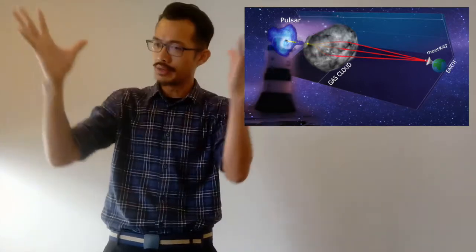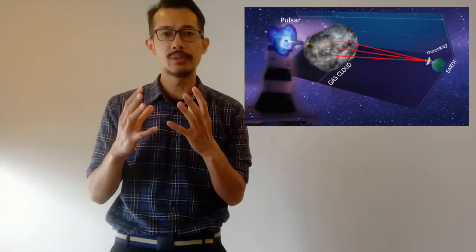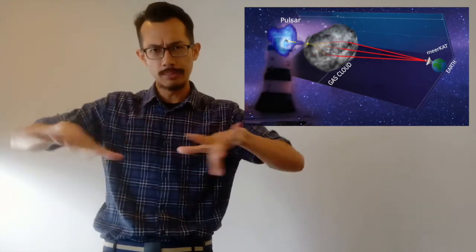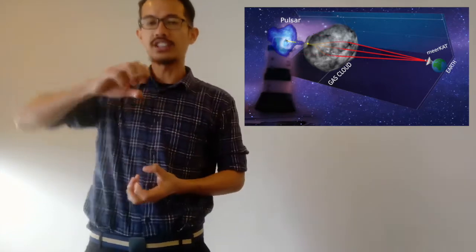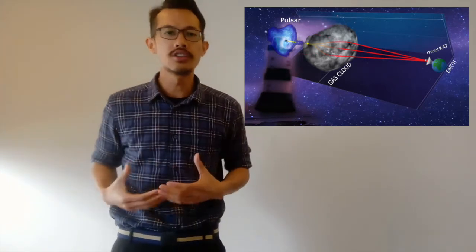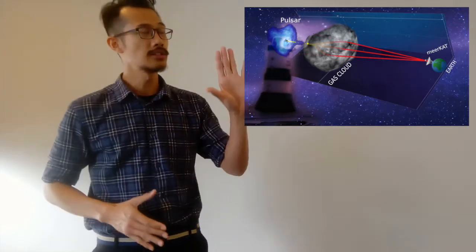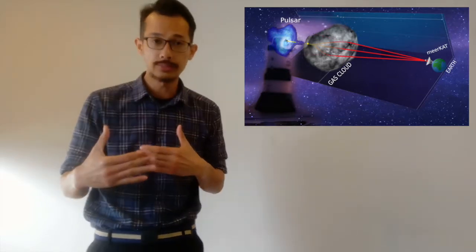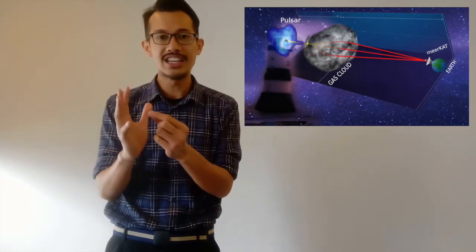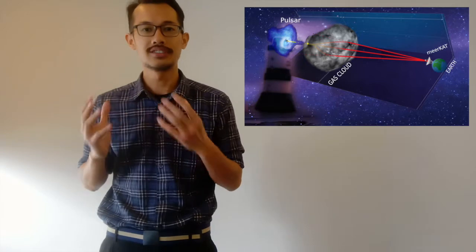When galaxies merge, the colliding supermassive black holes at their center produce ripples called gravitational waves that stretch and squeeze space, subtly altering the distance between us and the pulsar. We can detect this warping of space by looking for minute deviations in the arrival times of the pulsar's signal.